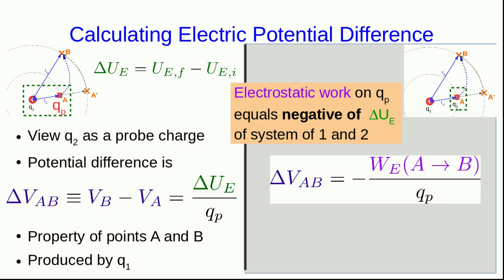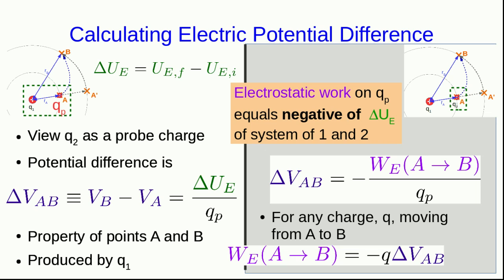And so our potential difference is the negative of the electrostatic work done on our probe charge as we move it from A to B divided by the probe charge, again so that all dependence on the probe charge disappears. Once we know the potential difference between two points, it's easy to calculate the work done on any particle that moves from one of those points to the other, because we simply have to multiply by the negative of that charge.